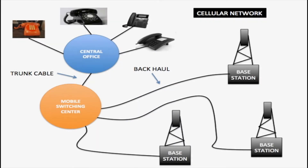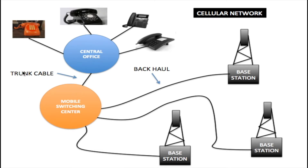Here is a map of a basic cellular network. The mobile switching center provides communication between the base stations. It also provides communication between landlines connected to the central office. These lines connecting between the mobile switching center and the base stations are called the backhaul. Any lines connecting between the central office and the mobile switching center are called trunk cables.